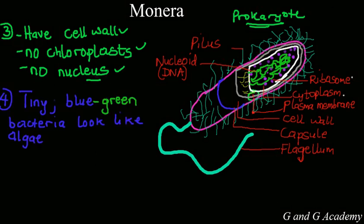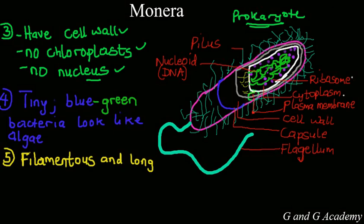Another thing is that Moneras tend to be tiny, although blue-green bacteria looks a bit bigger than the normal tiny bacteria. They are also filamentous, as you can see in the diagram — you can see the filaments showing that they are very filamentous. They are long and they are green.